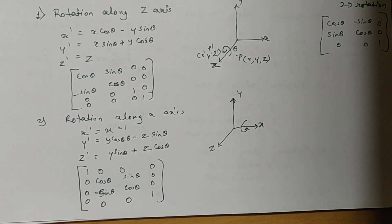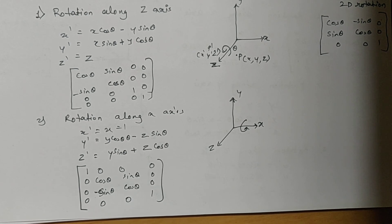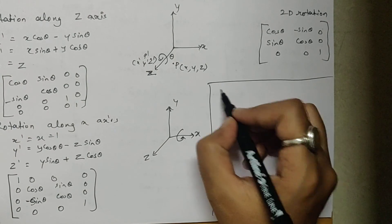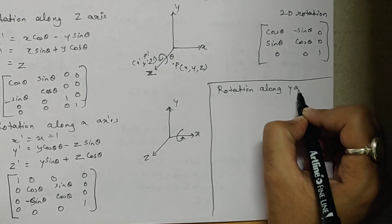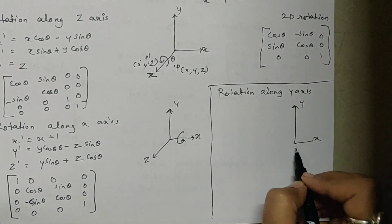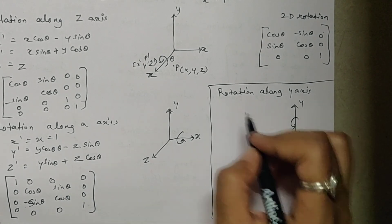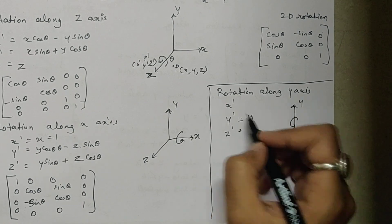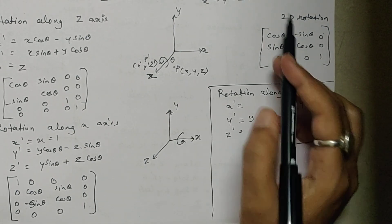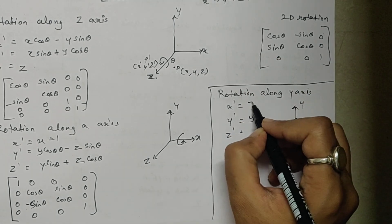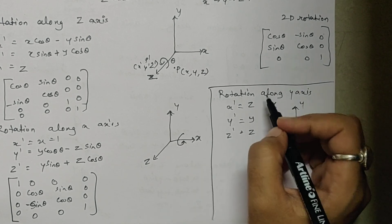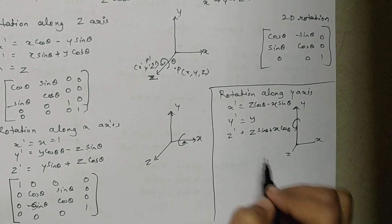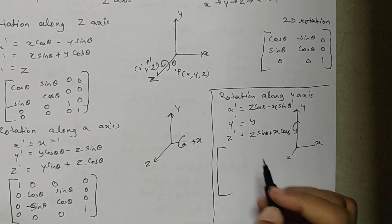Now let's calculate rotation along y axis. This is my x axis, this is my y axis, and this is my z axis. I want to rotate along y axis, so my y will remain the same — y dash equals y. I want to calculate x dash and z dash. Using the chain trick, after y I have z and then x. The formula becomes: z dash equals z cos theta minus x sine theta, and x dash equals z sine theta plus x cos theta.